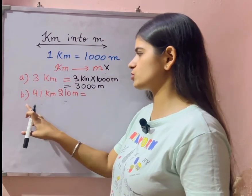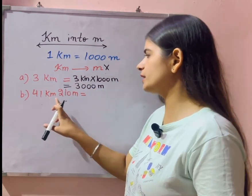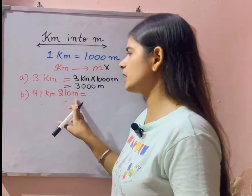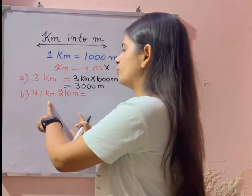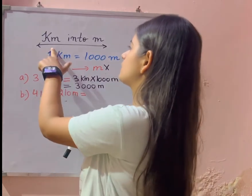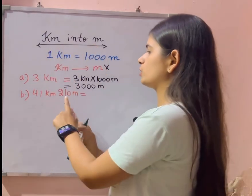So now next question: forty one kilometer and two ten meter. Abhi yahan pe kya hai? Meter bhi de rakha hai, kilometer bhi de rakha hai. Hame kya karna? Hamesha kilometer ko meter me convert karna hota hai. So hum is meter ka kya kare? So let's do this example.